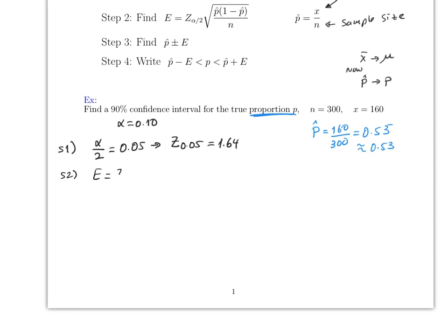Then step two, this is the part that I have to be very careful. This is z of alpha over 2 times the square root of p hat times 1 minus p hat divided by n. So in this case, this will be 1.64 times 0.53 times 0.47. How do we get 0.47? Well, 53 goes here, so 1 minus 53 is 47. The value for n is 300, so be careful when you do this.